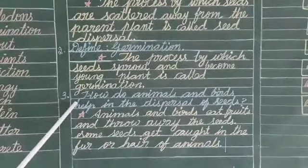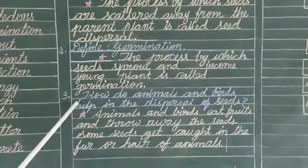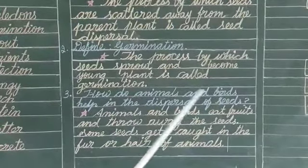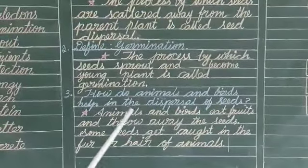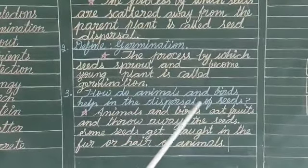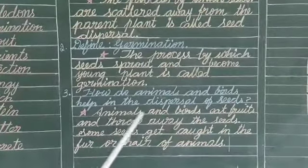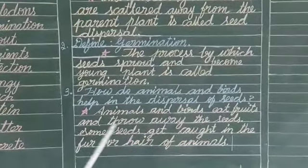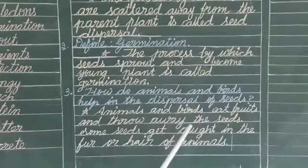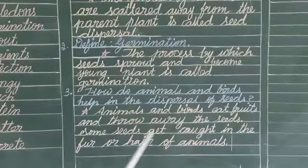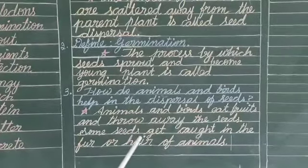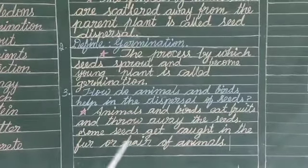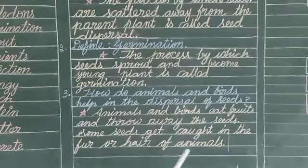The third question: How do animals and birds help in the dispersal of seeds? Animals and birds eat fruits and throw away the seeds. Some seeds get caught in the fur or hair of animals.